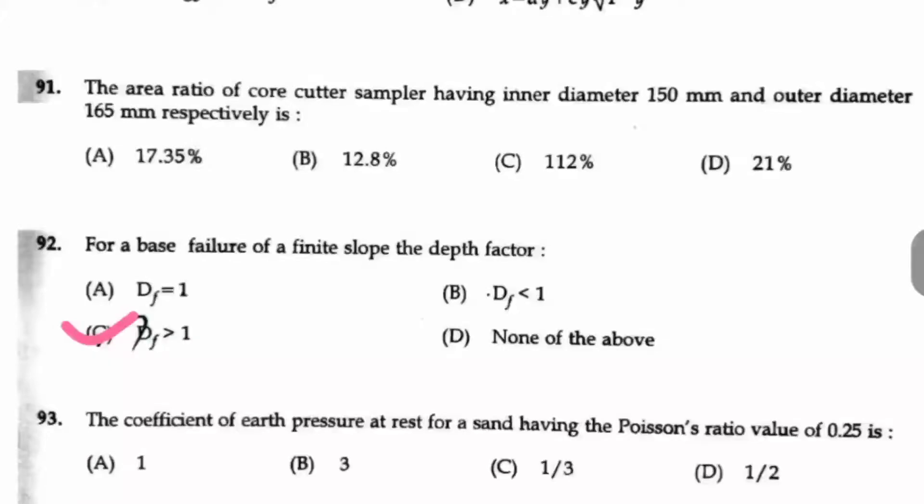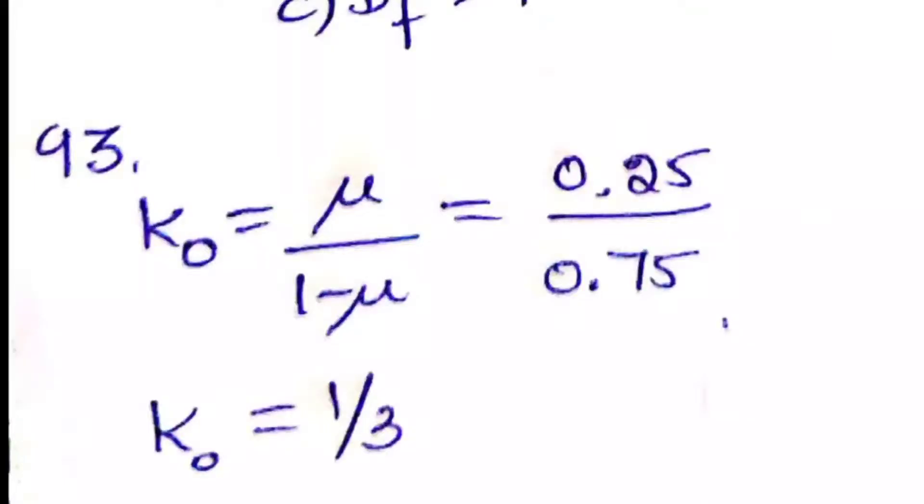Question number 93, the coefficient of earth pressure at rest for a sand having the Poisson's ratio value of 0.25 is dash. So the K naught, that is the at rest coefficient of earth pressure, is mu by 1 minus mu.